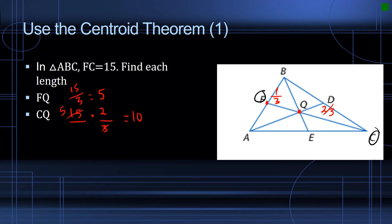Therefore, we see an example of how to determine measurements using the centroid theorem, which states that the medians of a triangle intersect at a point called the centroid, that is two-thirds of the distance from each vertex to the centroid, and then one-third from the centroid to the midpoint of the side opposite.